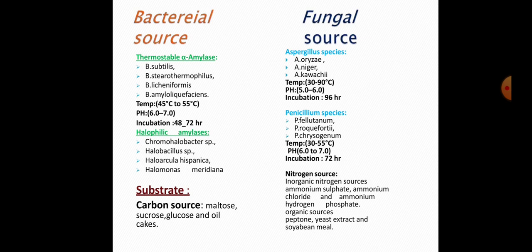Carbon sources include maltose, sucrose, glucose, and oil cakes. Fungal sources include Aspergillus species such as Aspergillus oryzae, Aspergillus niger, with temperature 32 to 90 degrees Celsius, pH 5 to 6, and incubation period 96 hours. Penicillium species include Penicillium fellutanum and Penicillium chrysogenum, temperature 32 to 55 degrees Celsius, pH 6 to 7, incubation period 72 hours. Nitrogen sources include inorganic sources such as ammonium sulfate, ammonium chloride, and ammonium hydrogen sulfate, and organic sources such as peptone, yeast extract, and soya.